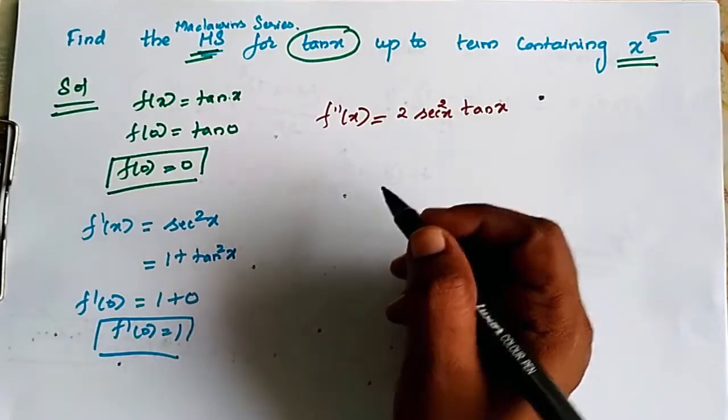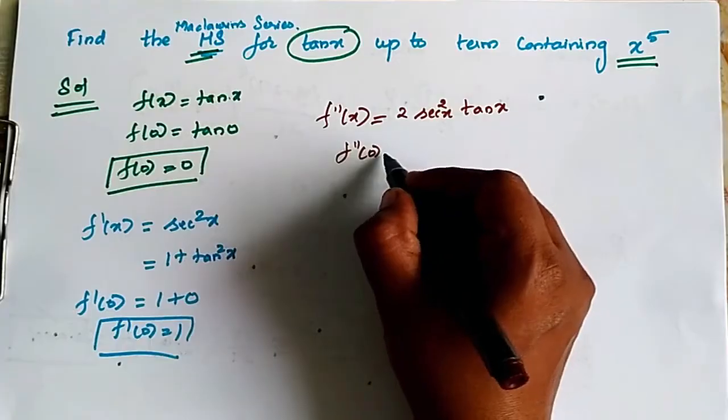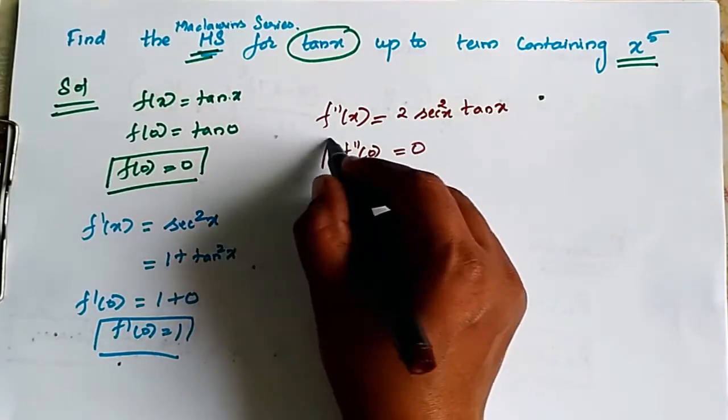Now if we substitute 0 here, tan 0 is 0, so f double dash of 0 is equal to 0.